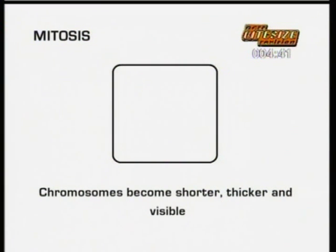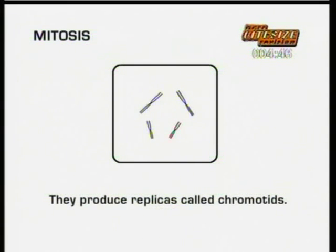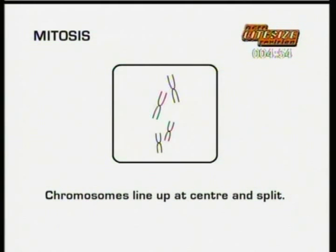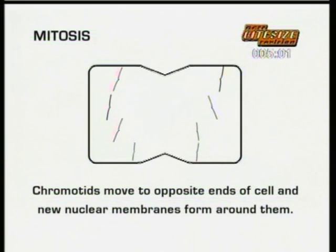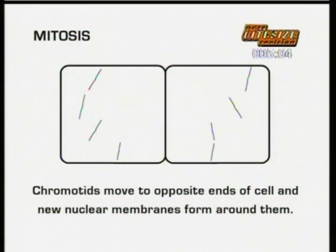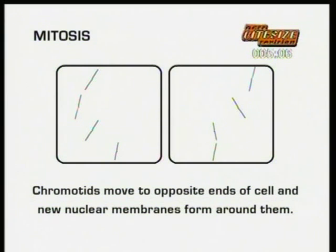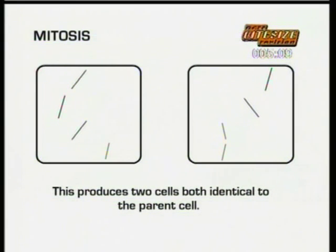During mitosis, the chromosomes become shorter, thicker and clearly visible. Each chromosome replicates and now consists of paired chromatids joined by a centromere. The chromosomes line up at the centre and then split at the centromere. The nucleus membrane breaks down and the sister chromatids move to opposite ends of the cell, where new nuclear membranes form around them. During the growth phase that follows, an exact copy is made of each chromatid. This produces two cells, both identical to the parent cell.